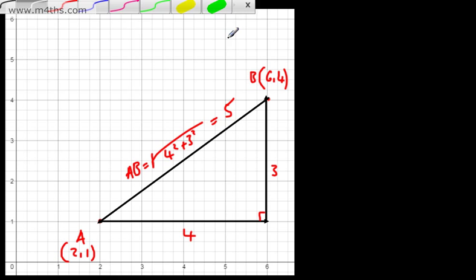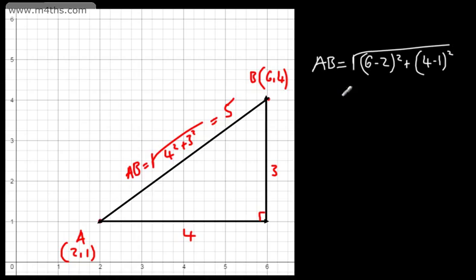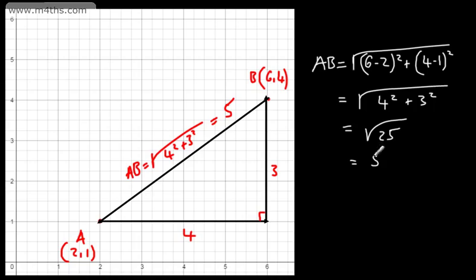What we can do is write that AB equals the square root of — considering what we've got — 6 minus 2, that's the first x-coordinate difference, which we need to square, plus the y-coordinate difference, which is 4 minus 1, which we need to square. That gives me the square root of 4 squared plus 3 squared, so the square root of 25, taking the positive value — 5 as its length. I could have done 2 minus 6 and 1 minus 4; those would give negative numbers, but when we square a negative number we get a positive number.